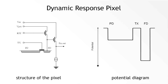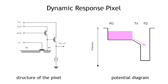The idea behind the dynamic response pixel is illustrated on these slides. On the left, you can see the structure of a typical pixel used in the industry today, and on the right is the potential diagram illustrating its operation. Charge is acquired on the photodiode, then you open the transfer gate, and charge is transferred to the floating diffusion.